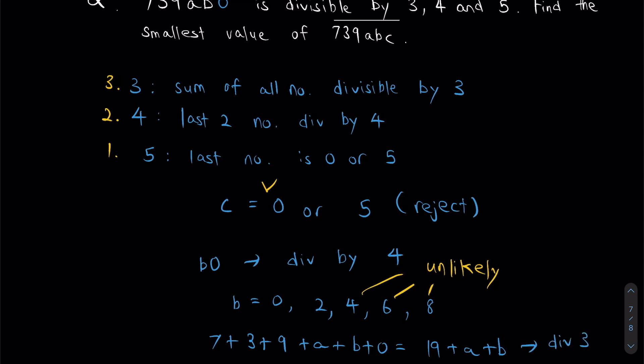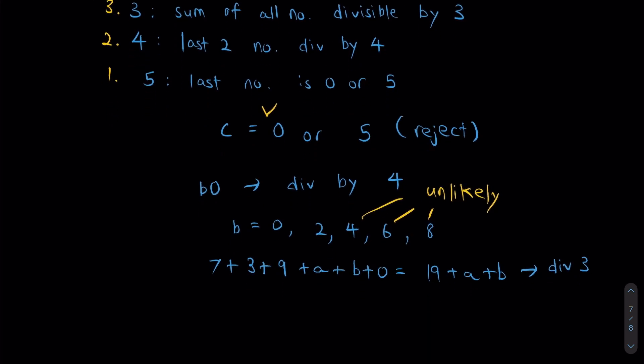So let's think, what is the next smallest number after 19 that's divisible by 3? Remember, we want to keep our number as small as possible. Which means 19 plus A plus B, to keep it as small as possible, this has to be equal to 21. Which means A plus B must be equal to 2.